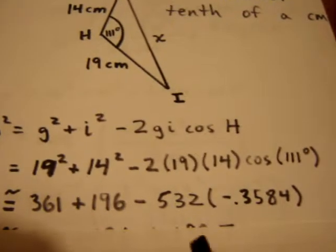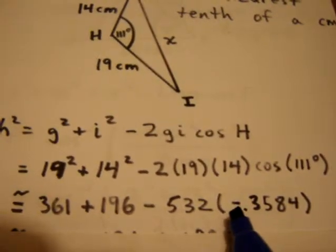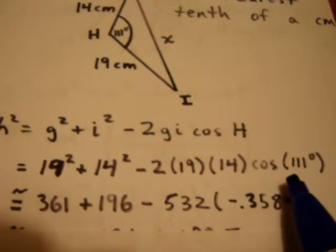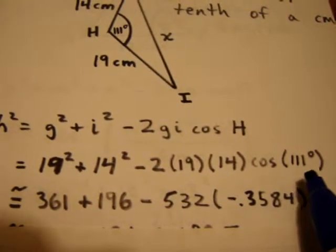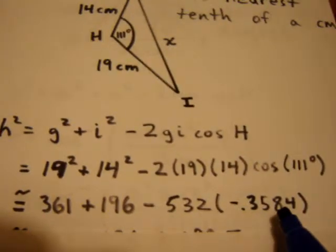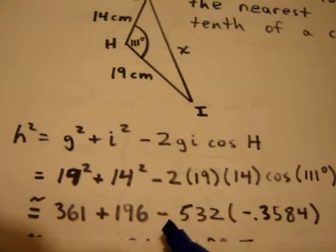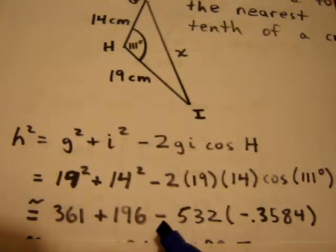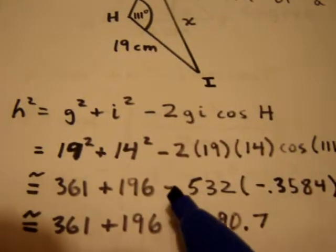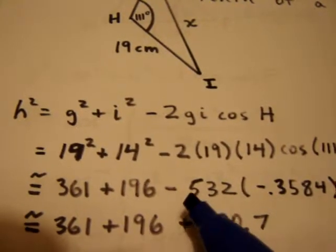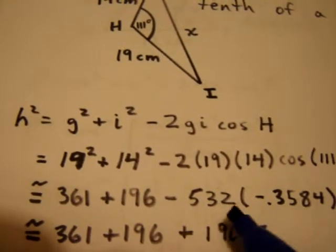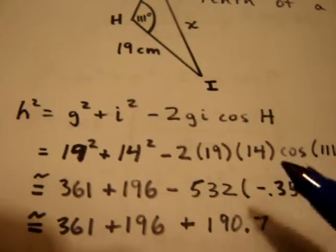At this point, sometimes people think that they've done something wrong because they have a negative sign right there. There's nothing to worry about, though, because every time you take the cosine of an angle greater than 90 degrees, this is going to become a negative number. Notice we're multiplying it by a number that we're subtracting. So, we're going to end up adding at this last term because we're subtracting a negative number.